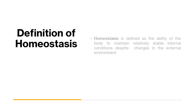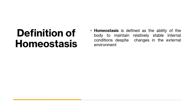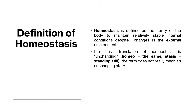Starting with the definition of homeostasis. Homeostasis is defined as the ability of the body to maintain relatively stable internal conditions despite changes in the external environment. The literal translation of homeostasis is 'unchanging' — homeo means same and stasis means standing still — but the term does not really mean an unchanging state.